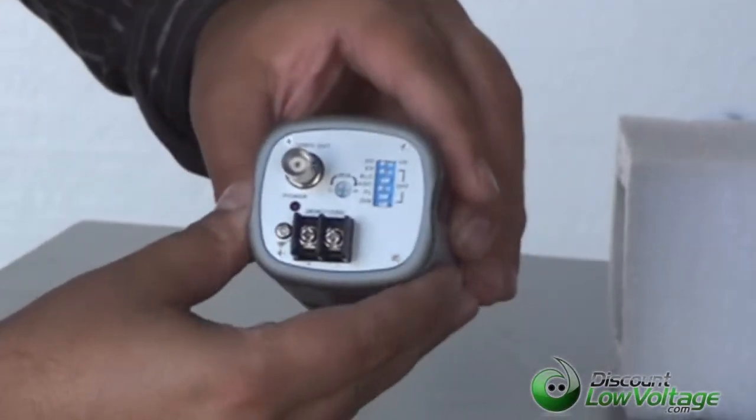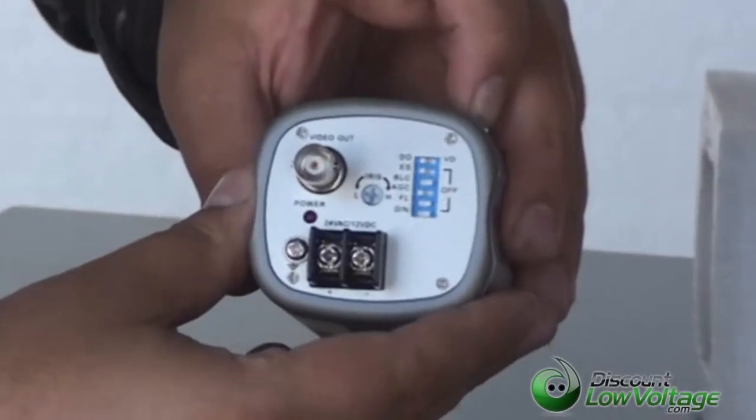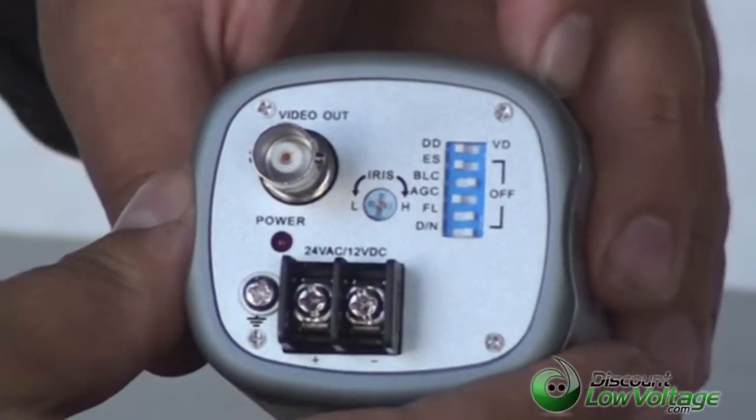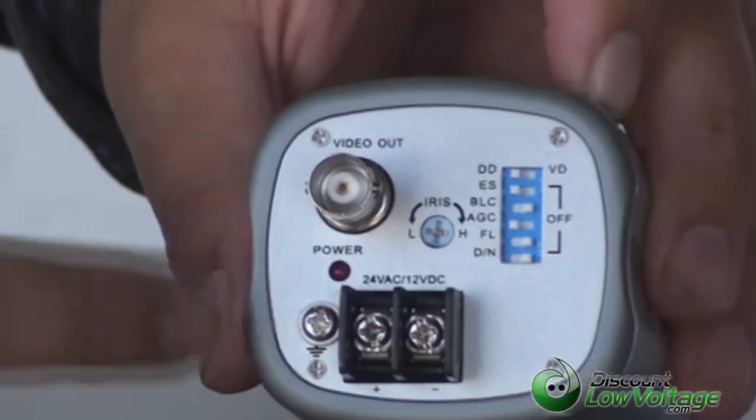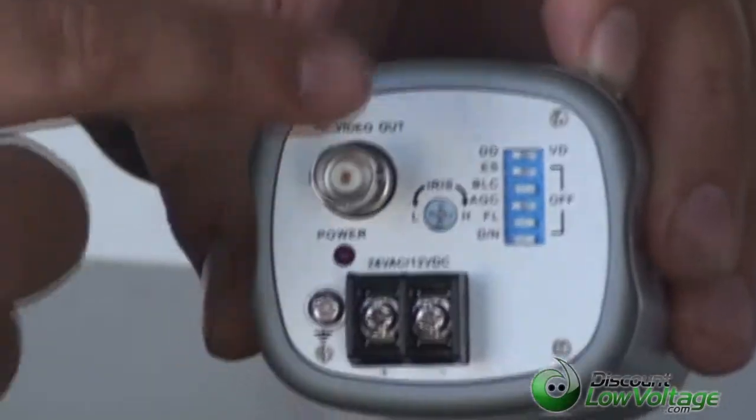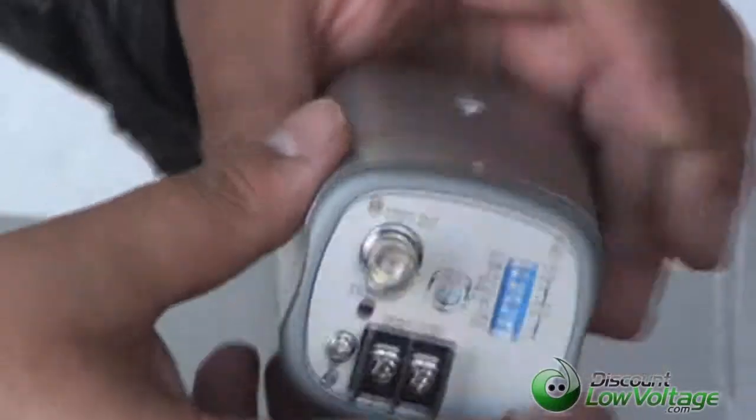Now, on the back here, you have your backlight compensation switch, your auto-gain control, and your screw terminals where you plug in your power. And of course, you have your video out for your BNC coax connector.